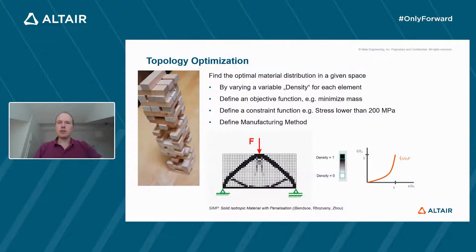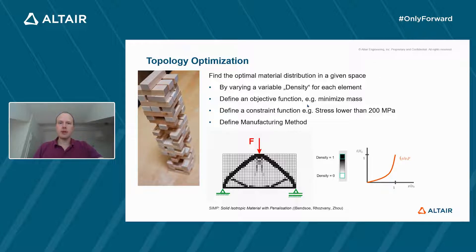Coming back to the second part of the suspension arm demo, let's talk about the topology optimization part. As a reminder, topology optimization is creating the best material distribution in a given design space — basically using varying finite elements with a so-called density parameter to find, for example, the lightest weight, maximum stiffness, or maximum frequency structure due to external loading.